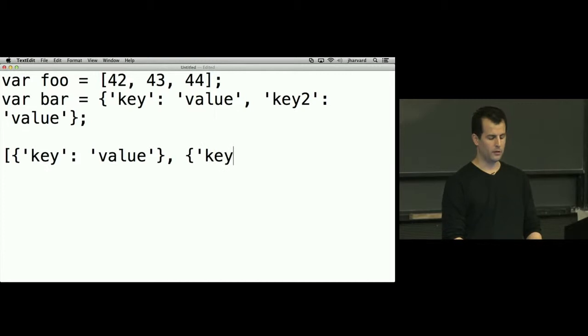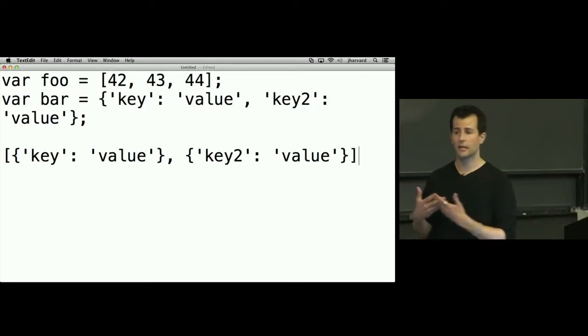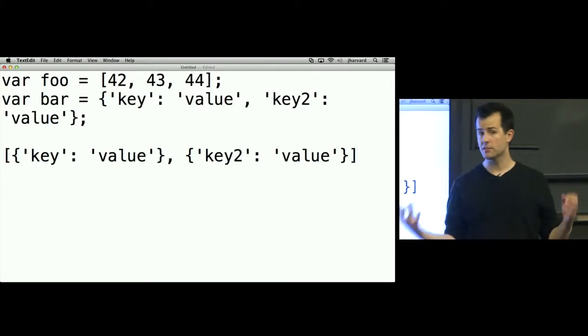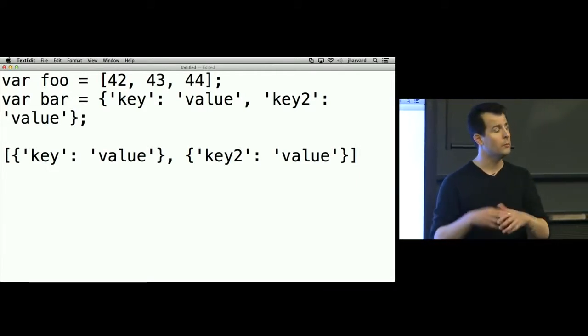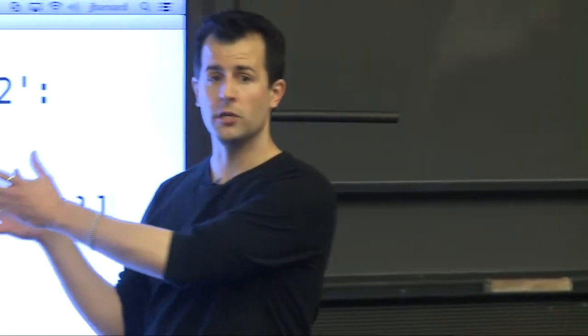So what if I want to get back an array of objects? I could get back an array of key colon, this is going to get tedious quickly, value, key two, colon, value, we'll stop there. So you can combine these basic syntactic constructs to come up with arrays of objects, objects with arrays inside of them and so forth. This is essentially JSON.